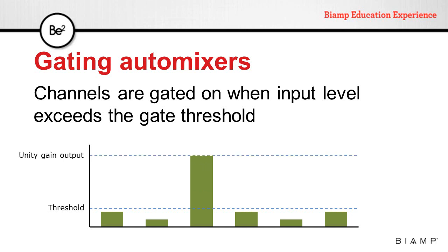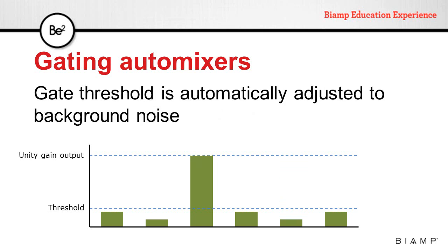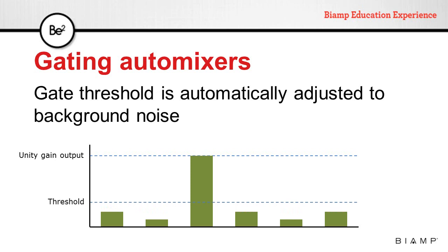If a second signal raises above the threshold, that second channel will also be gated on. The output level of the mixer will remain always at unity gain. If the level of that second signal drops below threshold, the channel is gated off. If at any point the background noise in the room changes, the automatic mixer will readjust the threshold accordingly. This should not affect normal gating on and off of microphones as they are being used.